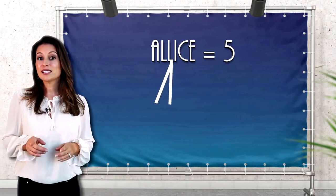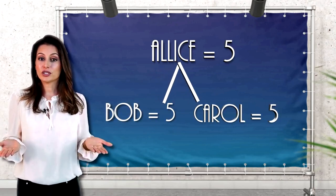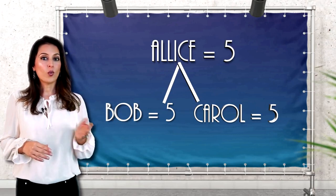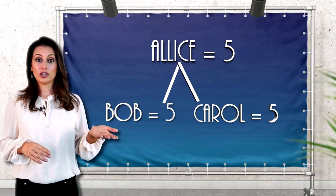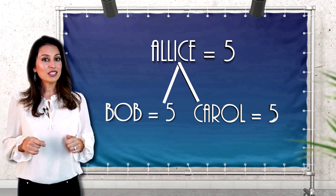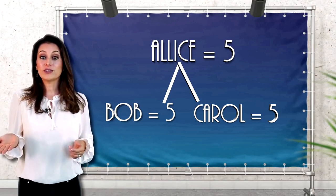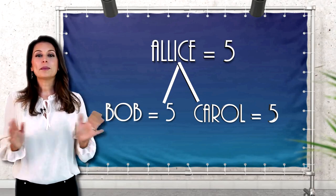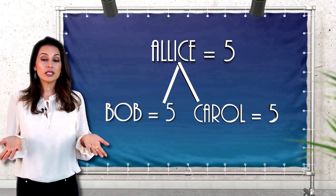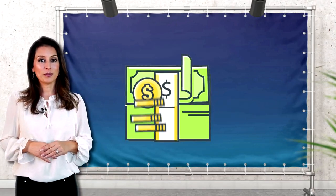If Alice's transactions were recorded on two separate ledgers, it is possible that one ledger would show she paid $5 to Bob while the second ledger may show she paid $5 to Carol. It would be impossible to tell who actually got paid. This is the double spend problem.